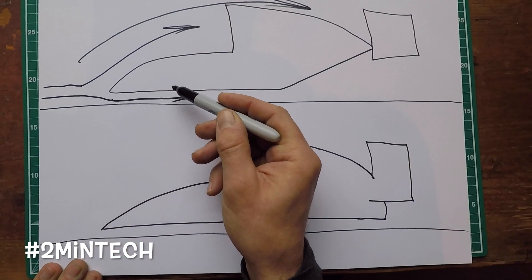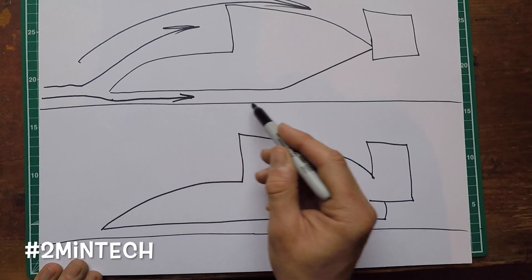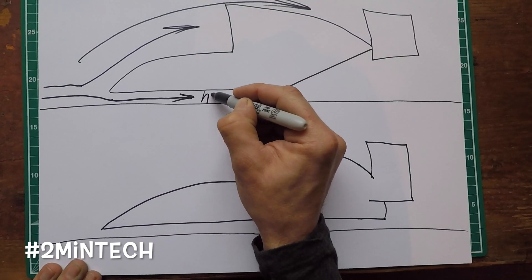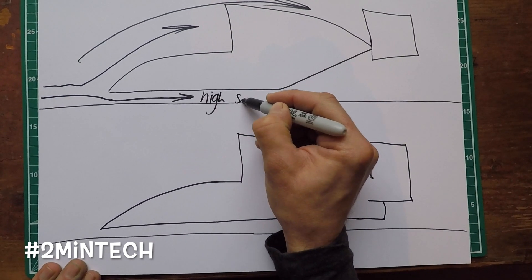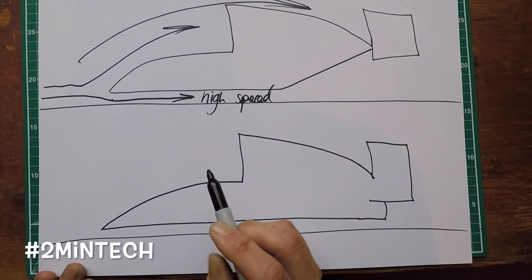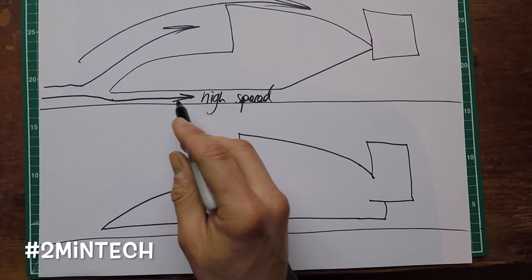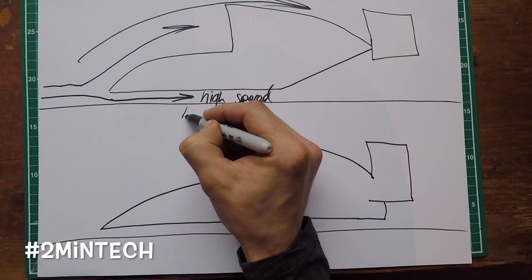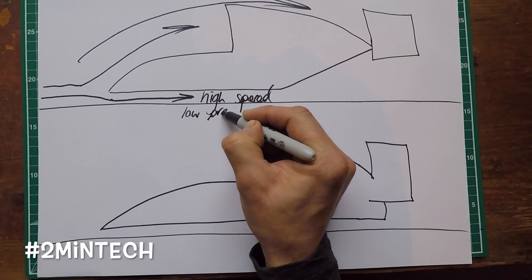Being squeezed between the bottom of the flat Formula One car and the ground of the race track, that means that this becomes very high speed airflow. Now because it's high speed and we know about Bernoulli's principle which says that as airflow speeds up the pressure drops, so that now becomes low pressure.